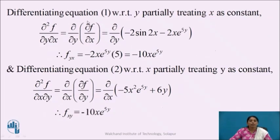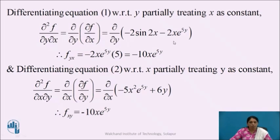Similarly, differentiating equation 1 with respect to y partially, treating x as constant, gives us ∂²f/∂y∂x. We get ∂/∂y of (−2sin(2x) − 2x·e^(5y)). The term −2sin(2x) is constant, so its derivative is 0. For the second term, −2x is treated as constant, and the derivative of e^(5y) is e^(5y) × 5. This gives f_yx = −10x·e^(5y).